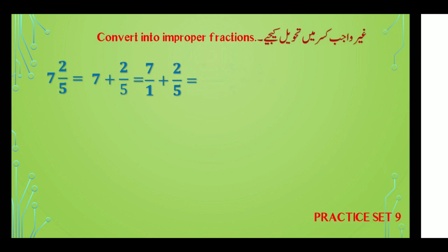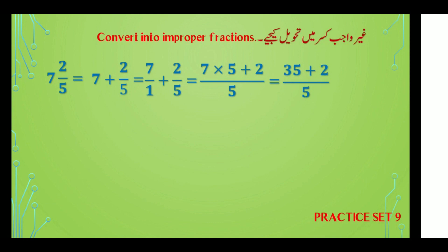اس کے بعد ضرب کریں گے: five into seven plus two upon five۔ Five into seven is equal to thirty-five plus two — thirty-five plus two is equal to thirty-seven، so thirty-seven upon five will be the answer.